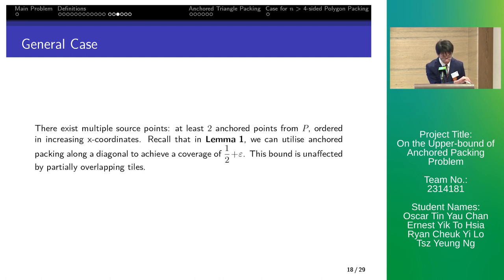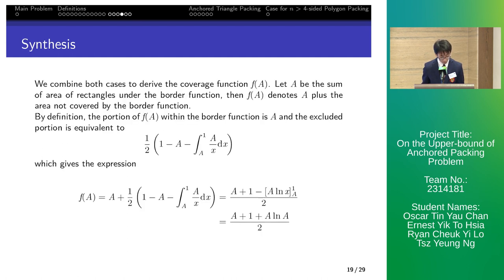In this case, there are at least two anchored points from p with increasing x coordinates. From lemma 1, packing on a diagonal gives a coverage of one half. Note that the bound is then affected by partially overlapping tiles. We then jointly analyze both cases.